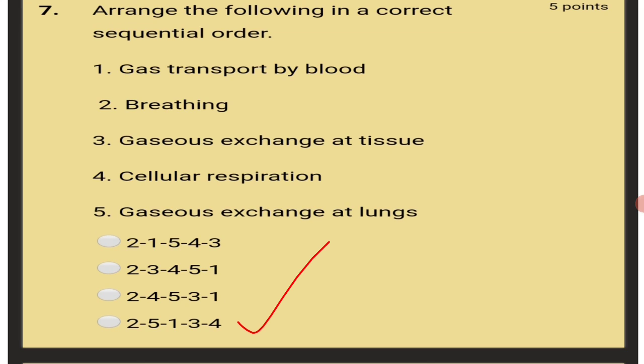First one is breathing and after breathing gaseous exchange takes place at lungs and then gas enters into blood. Gas is transported by blood and gaseous exchange at tissue level takes place and now the cellular respiration occurs. That is 2-5-1-3-4.